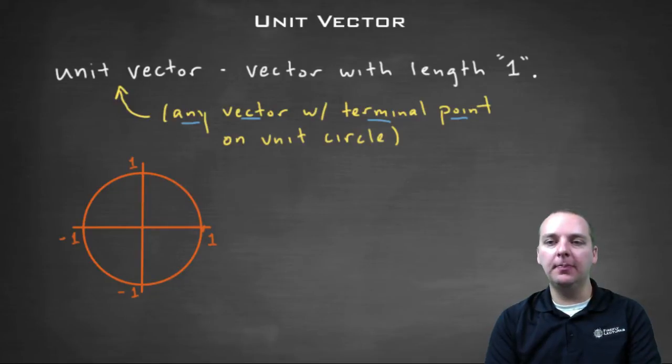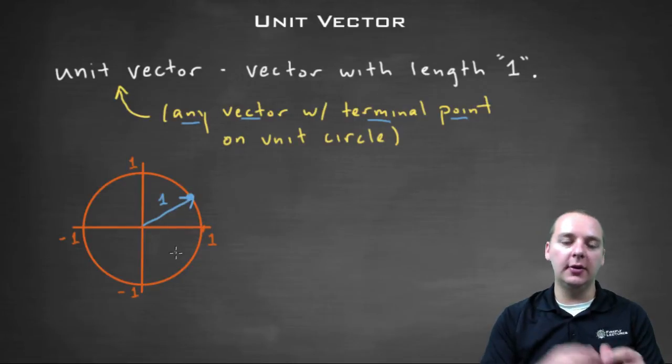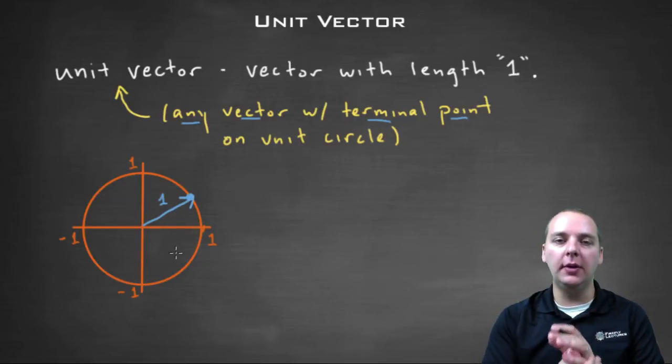Because any point that you would pick, let's say you pick a point out here on the unit circle, that point right there, if that's the terminal point for your vector in component form, then by default the length of that vector would be one, since it's on the unit circle.